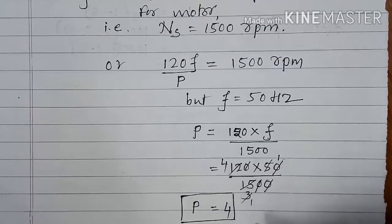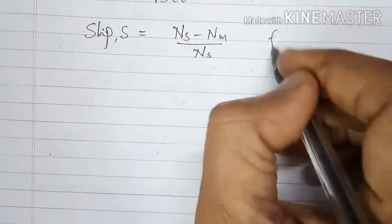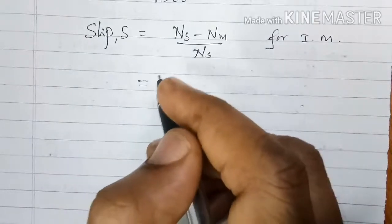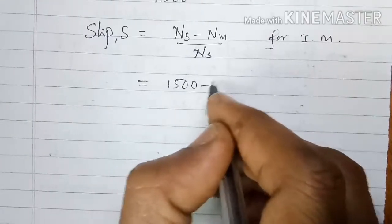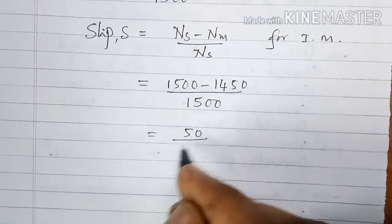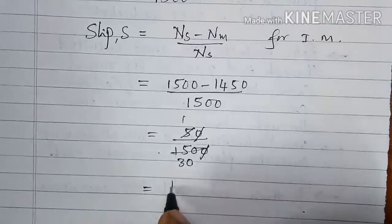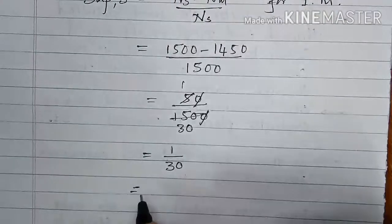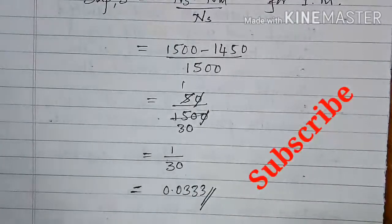So the number of poles of the motor equals 4. Slip S = (Ns − Nm) / Ns = (1500 − 1450) / 1500 = 50 / 1500 = 1/30 = 0.0333.